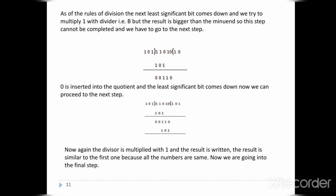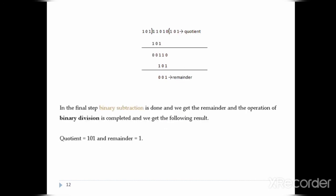We try to multiply 1 with the divisor, but the result is bigger, so this cannot be completed. Therefore 0 is inserted into the quotient and the next least significant bit comes down. We then multiply the divisor by 1 again, and the result is similar to the first step since all numbers are the same. In the final step, binary subtraction is done and we get the remainder. The operation of binary division is completed.